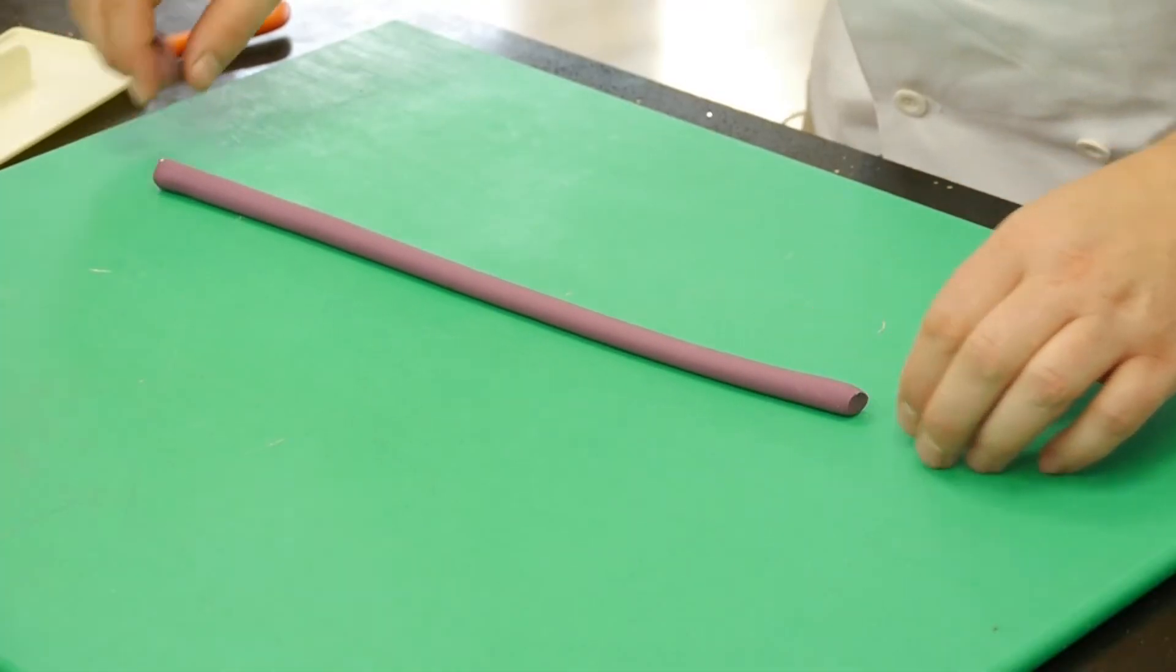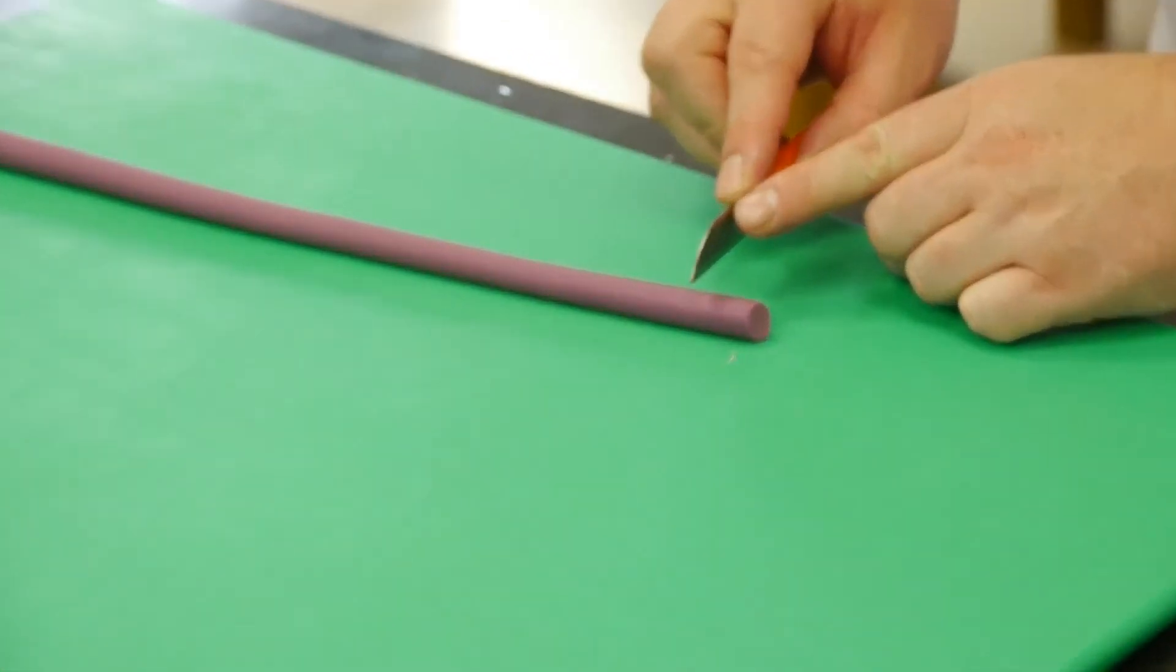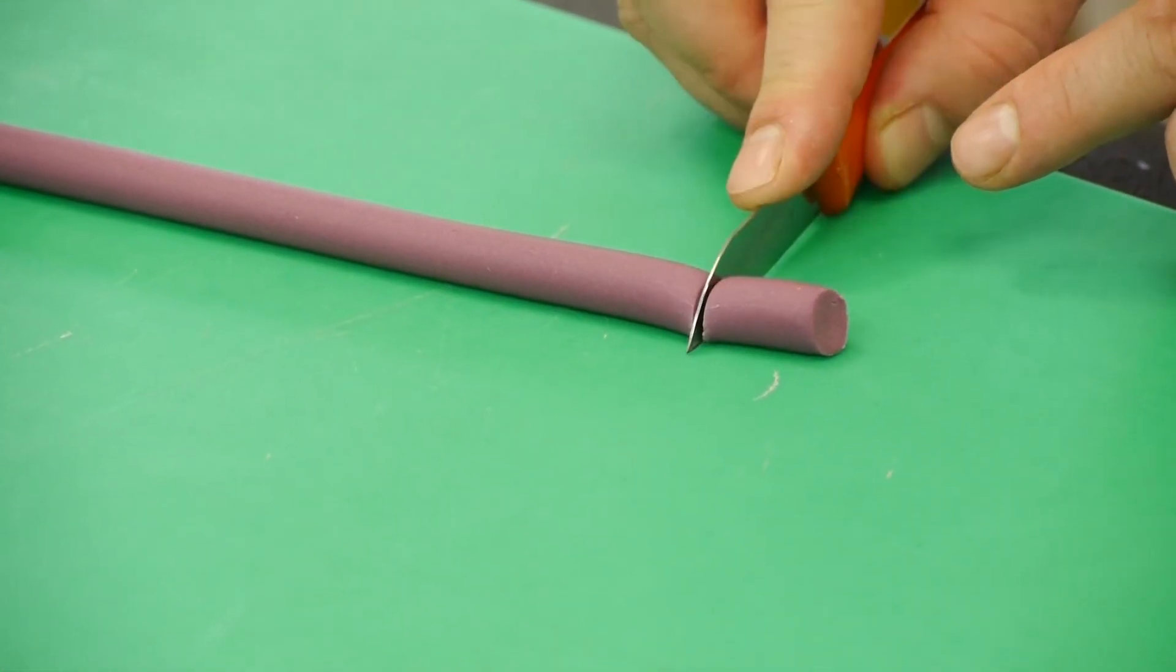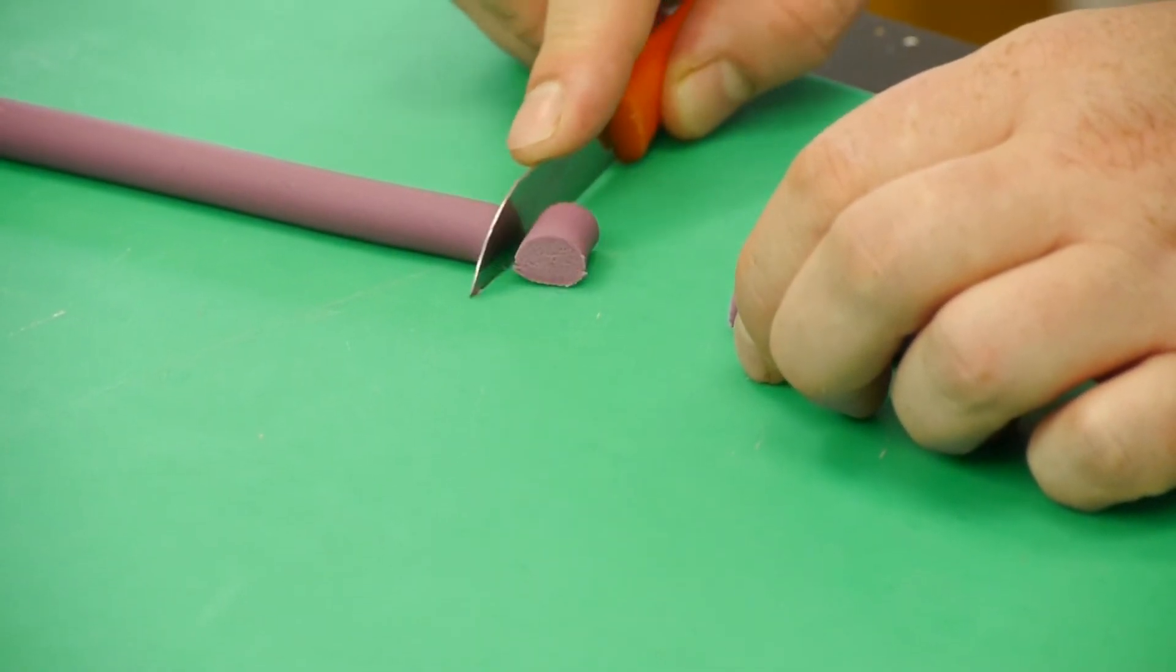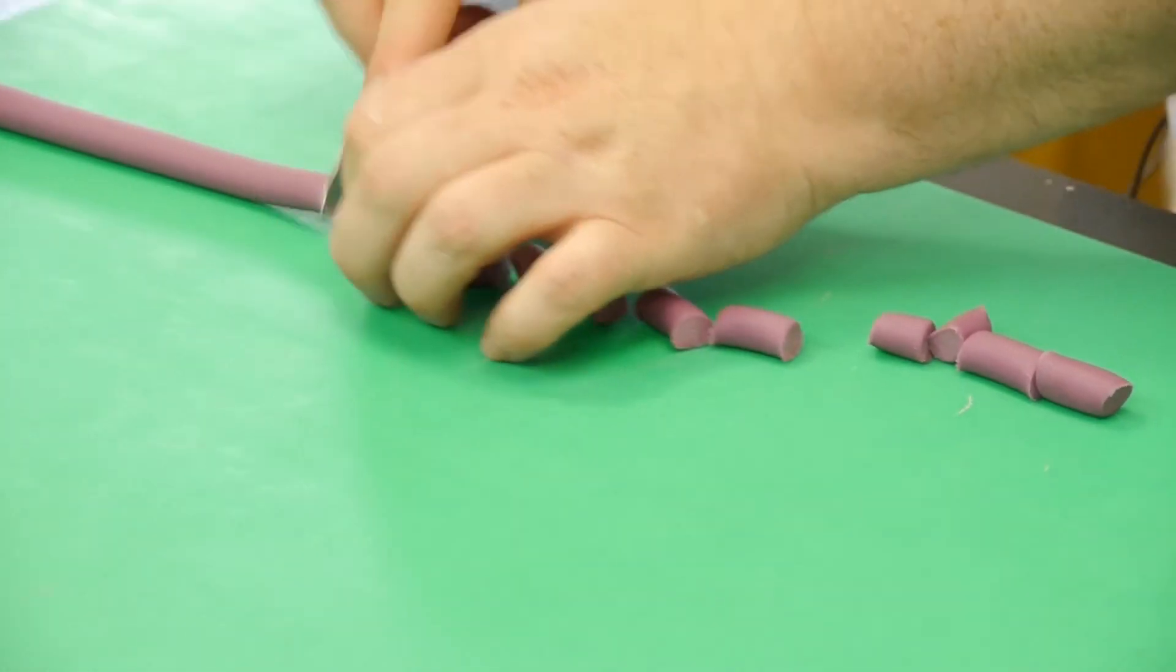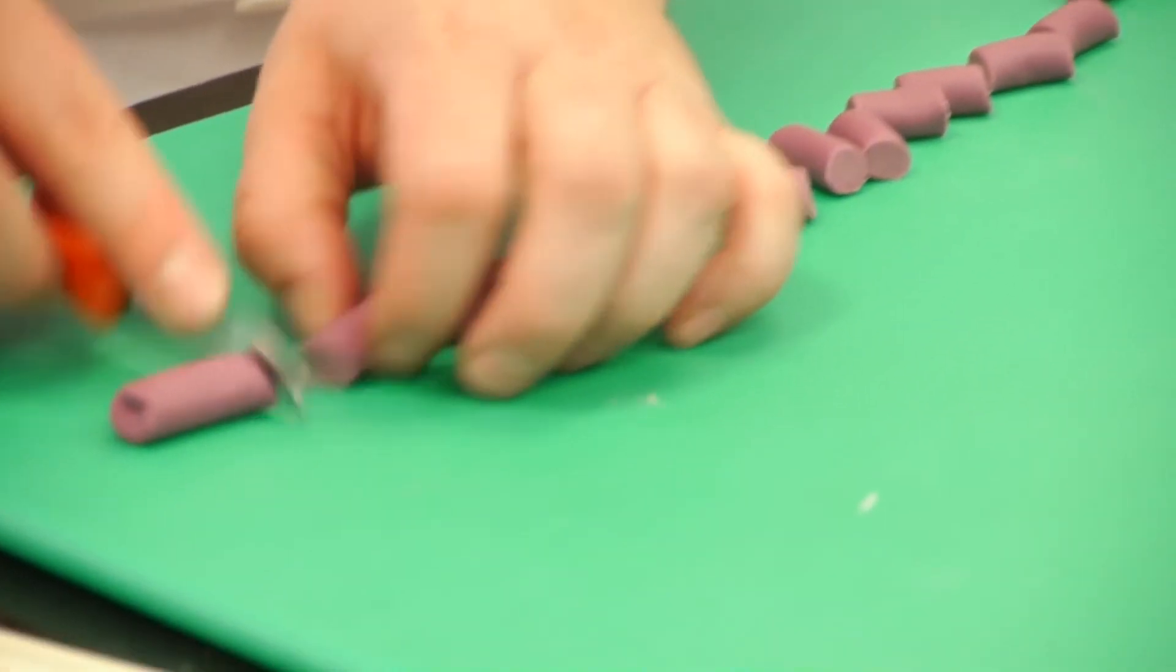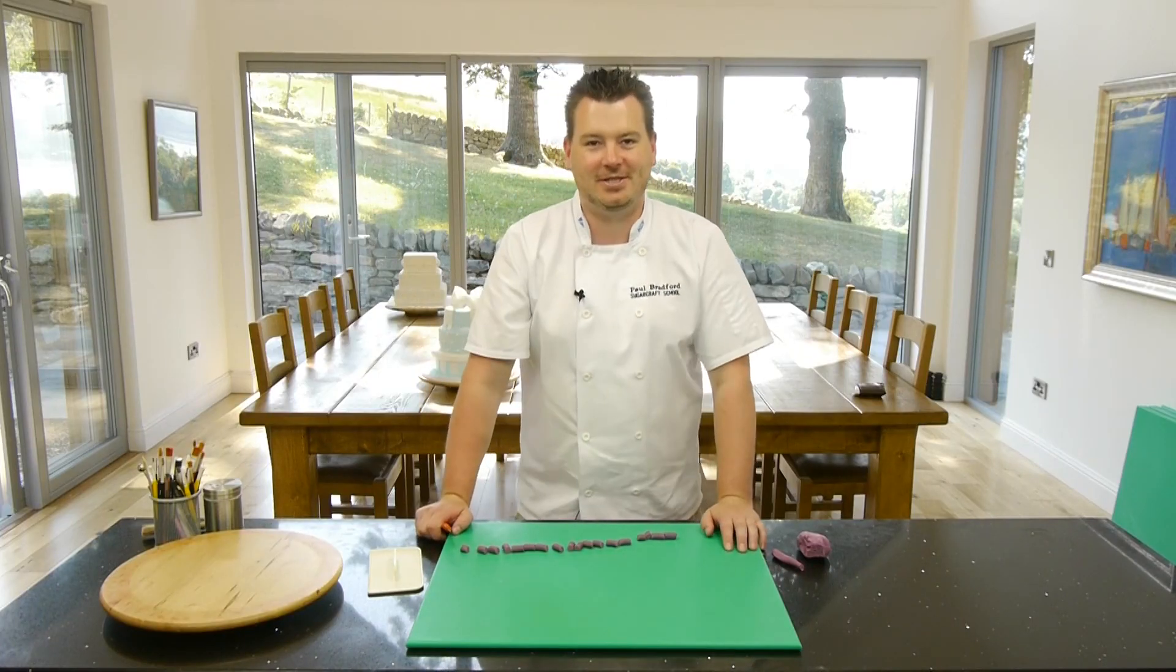Now once you've done that, just for getting nice cuts, just make sure you're using a knife. And when you're cutting down, just cut straight down, no sawing action, just down and away. Okay, so down and away. So don't do this, okay, it can look all right but your best you can see there just pull. And there we go, so there's how to make a sausage and how to cut a sausage.